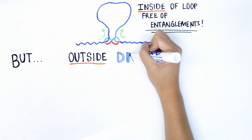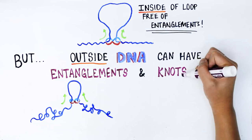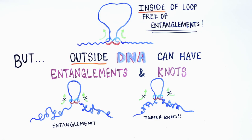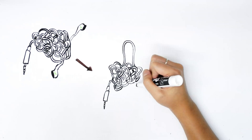There is a problem, however. Already entangled or loosely knotted DNA segments outside of the loops might be converted to tighter knots as chromatin is fed through the extrusion complex and loops are enlarged. This would be analogous to what might happen if you were trying to untangle your headphone wires by simply pulling on one of the loops.